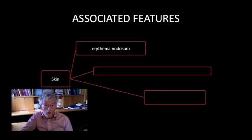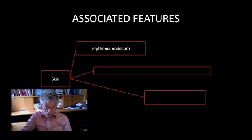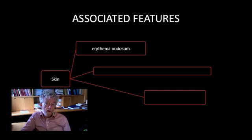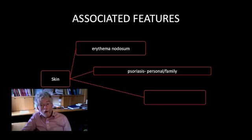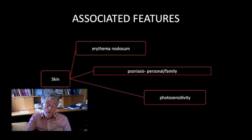The skin also can yield important diagnostic information and be the site of disease in a number of rheumatic diseases. One needs to ask questions with regard to the presence of erythema nodosum, which can manifest as discrete red raised painful lesions in the lower limbs, but also can be present as diffuse redness around the ankle simulating ankle synovitis. Also ask about skin ulcers, presence of psoriasis in the patient or in their family, and the presence of photosensitivity either in the past or as a consequence of drug exposure.